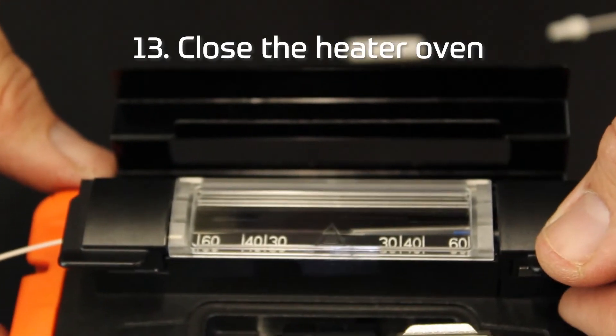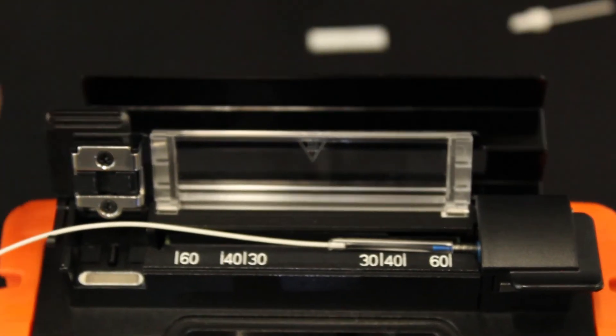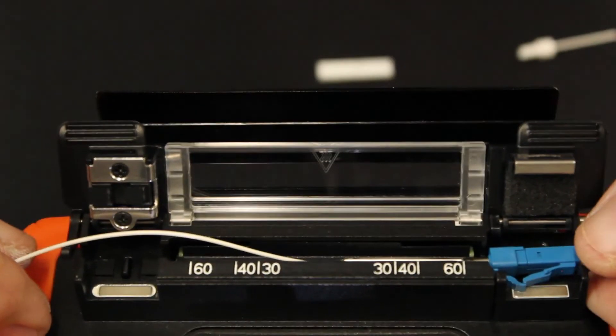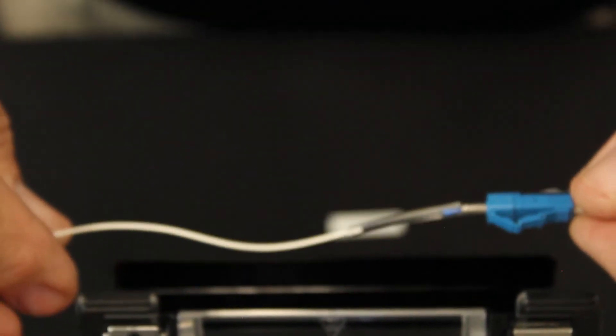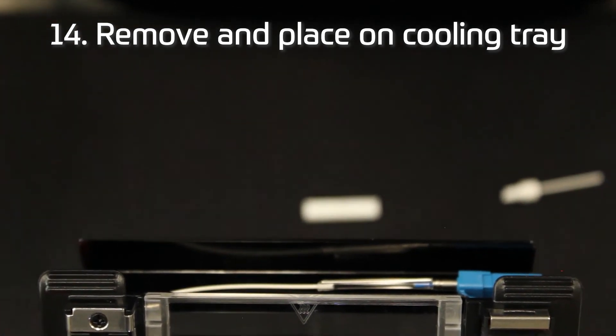Close the heater-oven door and push the heater button if the auto-start is not enabled. Remove the shrunk splice-on connector and place it into the cooling tray.